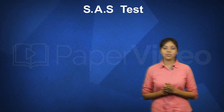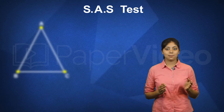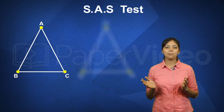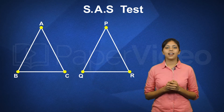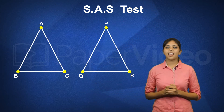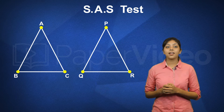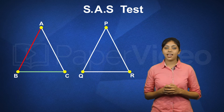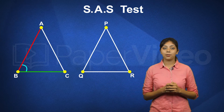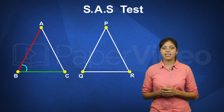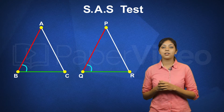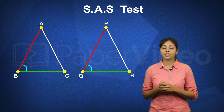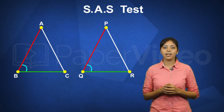To understand this, let us consider two triangles ABC and PQR. According to the Side Angle Side Test, if any two sides and an included angle of triangle ABC are equal to the corresponding sides and included angle of triangle PQR,